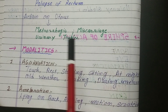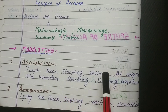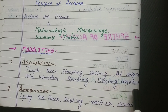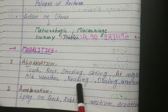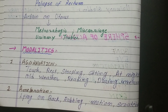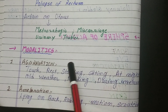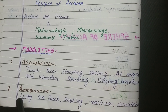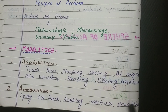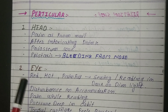General modalities: aggravation by touch, rest, straining, sitting, at night, cold weather, reading, during menses. These are general — not specific to one system — so you can mix all aggravations here when writing. Amelioration: lying on back, rubbing motion, and scratching. That is the amelioration pattern for Ruta.